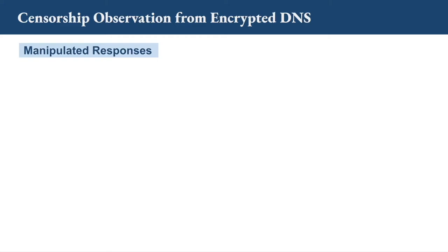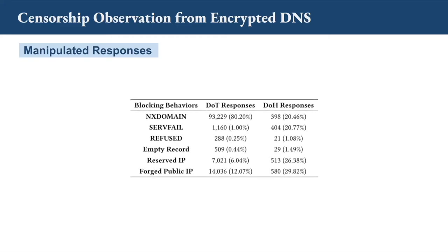Let's take a look at the manipulated responses. In our dataset, we see multiple types of error DNS messages, such as NXDOMAIN, SERVFAIL, and REFUSED. We also see empty records — valid DNS packet format but without an IP address. Finally, many DNS responses contain forged public IP addresses.